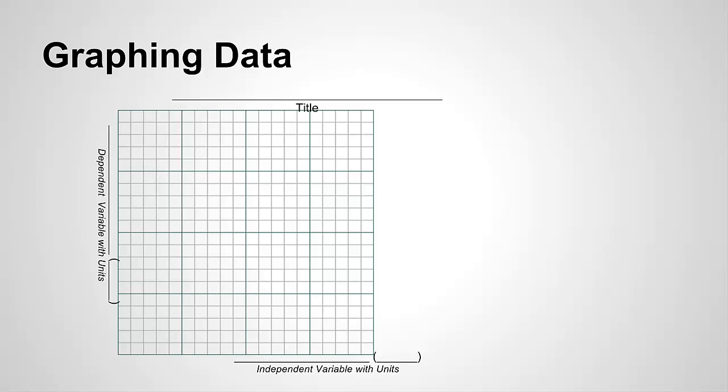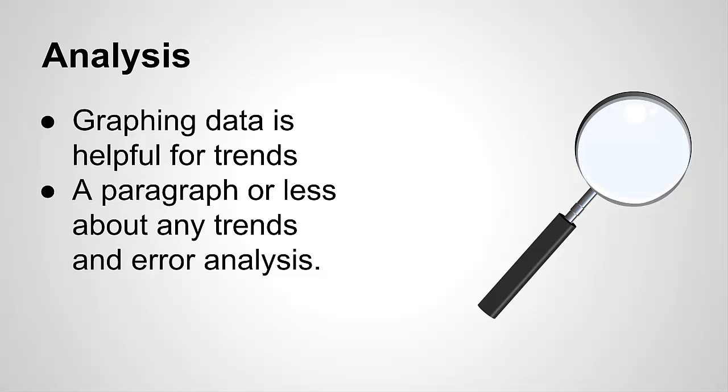Generally speaking, the independent variable should be on the x-axis, and the dependent variable, that's your results, on the y-axis. Remember that the x-axis is from left to right, and the y-axis is up and down on the graph.